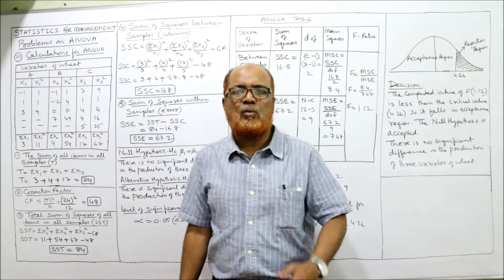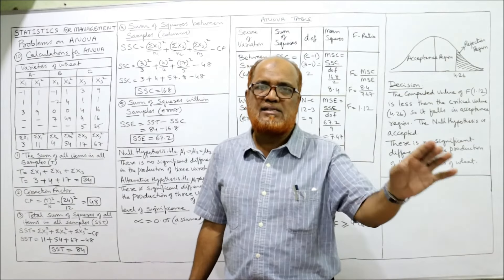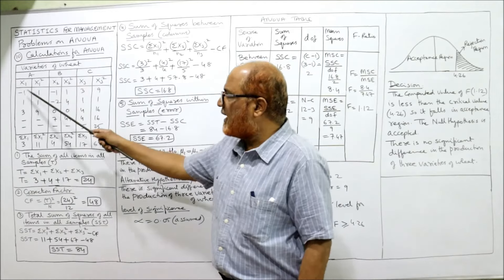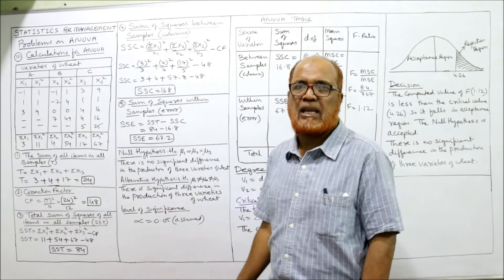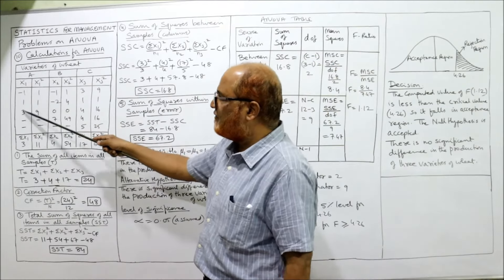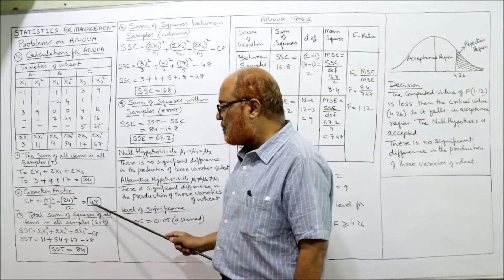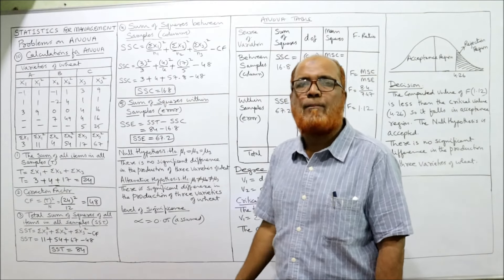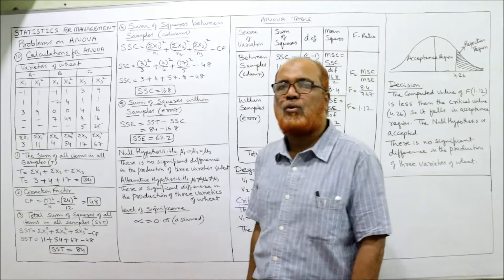Remaining steps are the same as previous problems. T = summation x1 + x2 + x3 = 3 + 4 + 17 = 24. CF = T² ÷ n = 24² ÷ 12 = 48. Total plots n = 12. SST = x1² + x2² + x3² − CF = 11 + 54 + 67 − 48 = 84.